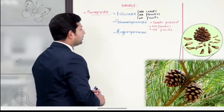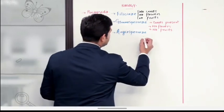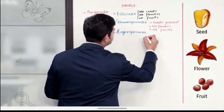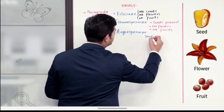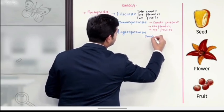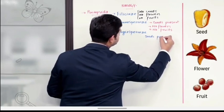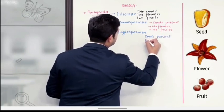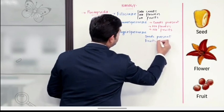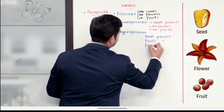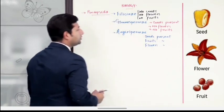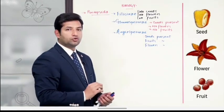फिर उसके बाद third group जो हमारे पास आ रहे हैं students, that is Angiospermae. और Angiospermae के features कौन-कौन से हैं - it possesses all of the three structures that we have mentioned here: seeds present, fruits present, and flowers present. All right, तो ये तीनों classes हैं जिनको one by one अब हम further detail में लेके जाते हैं।